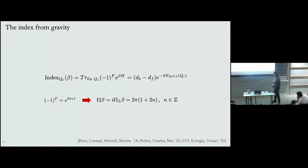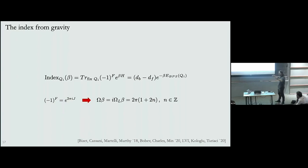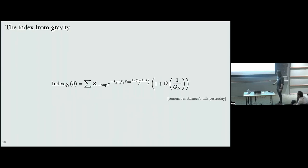The angular velocity in Euclidean signature — denoted big Ω — is related to i times the angular velocity in Lorentzian signature. In order to obtain this factor of (-1)^F, we in principle have to sum over all angular velocities of the form where n is an integer. However, we'll see that only a finite number of those contribute. Let's try this in the simplest example we know to see if it works.